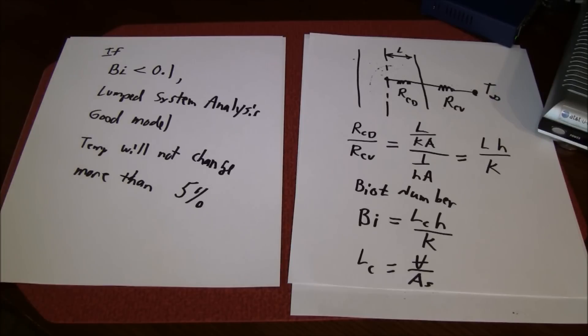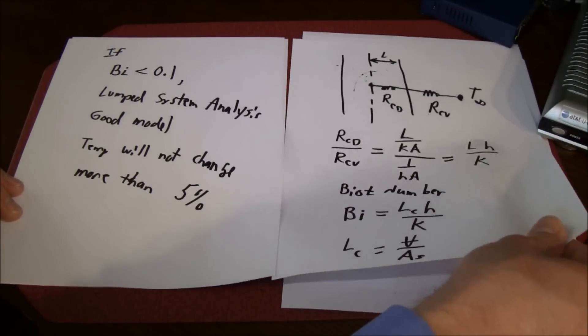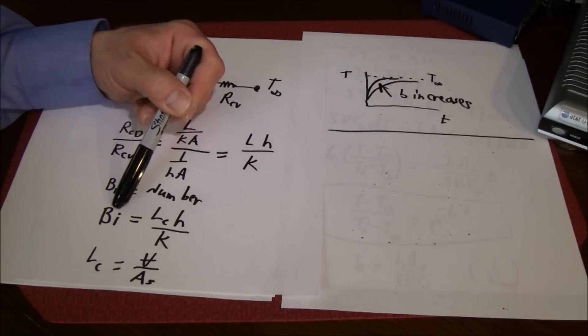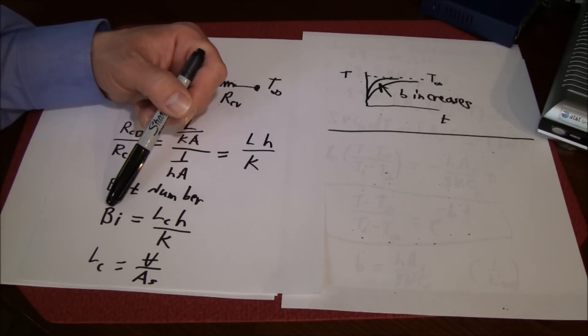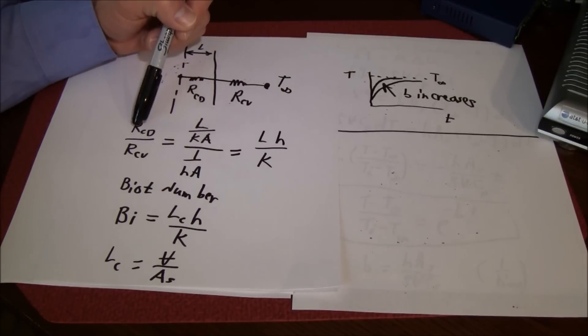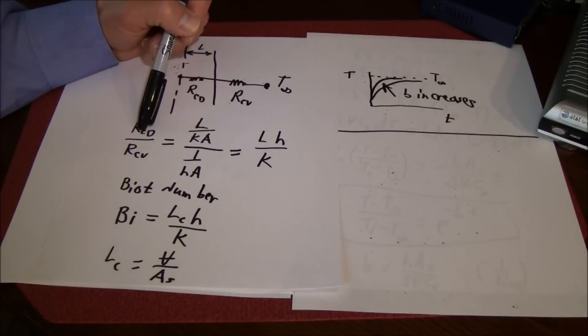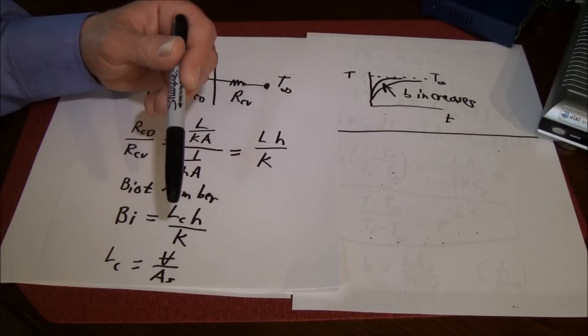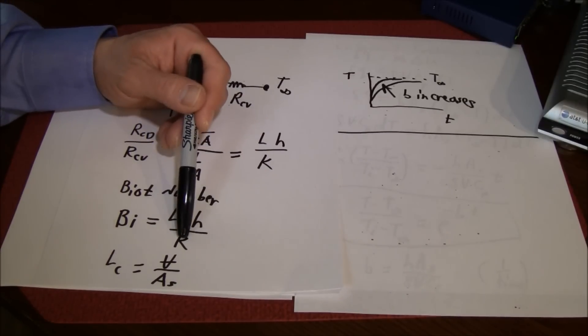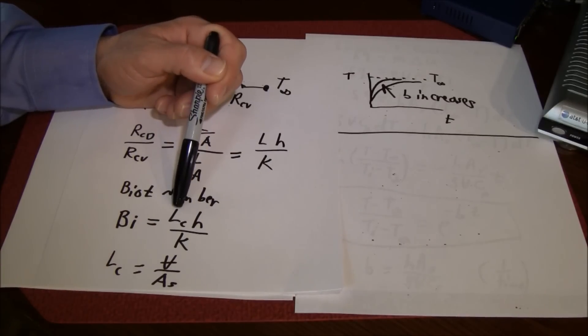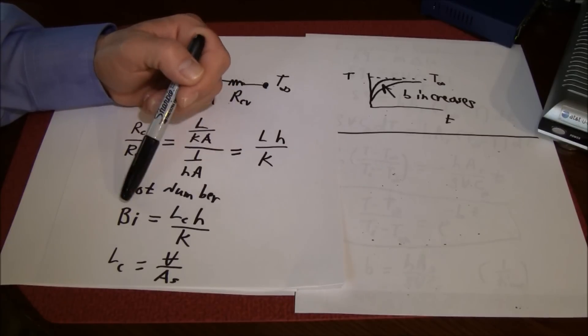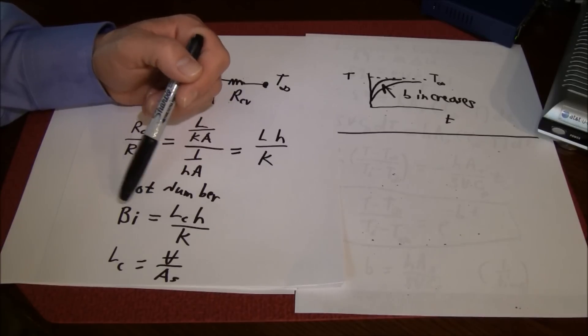Notice what would make a good lump system analysis problem. If Biot is small, the smaller it is the better the assumption of uniform temperature. For example, if the resistance due to conduction was zero, then it would be a perfect model. If the conductivity is high like a metal like aluminum, or if your object is small, both of those conditions would indicate that they could possibly be a good candidate for the lump system analysis model.